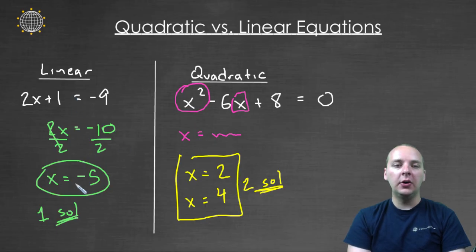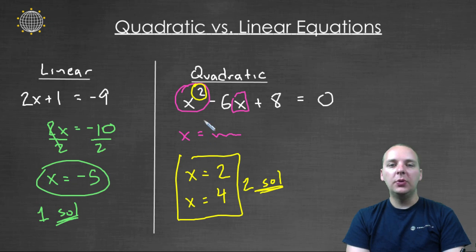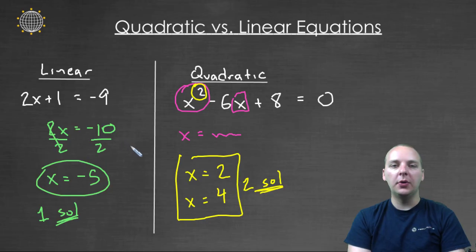Now why is that? Why do linear equations only have one, and quadratic equations sometimes have two? They don't always have two solutions, but in this case it does. It's because of the square term right here. And so we just have a lot of differences between quadratics and the linear equations that we're comfortable with.